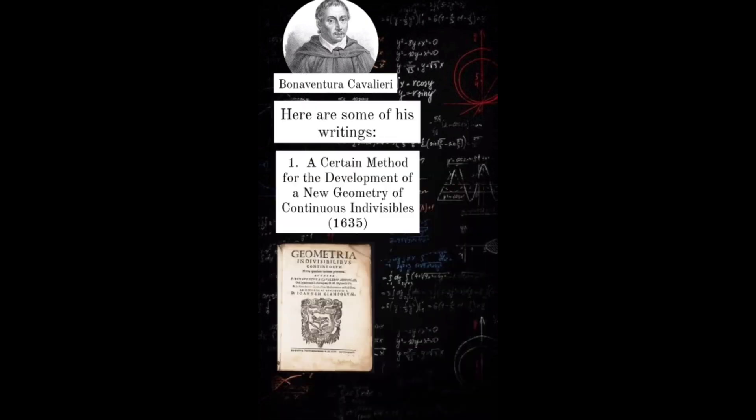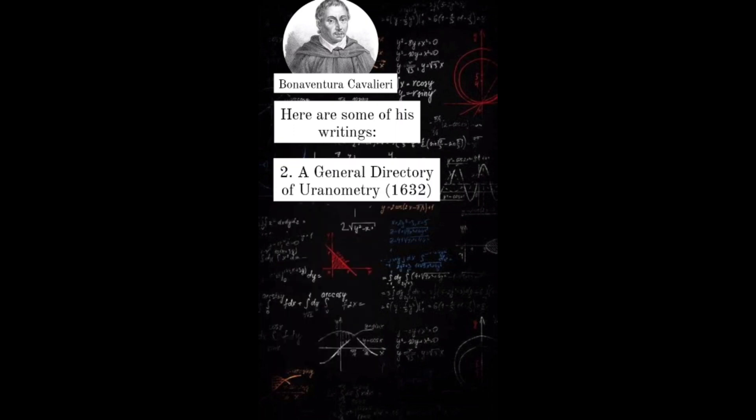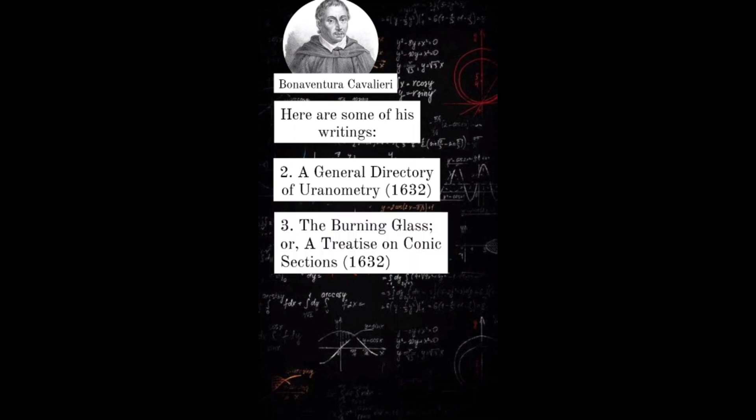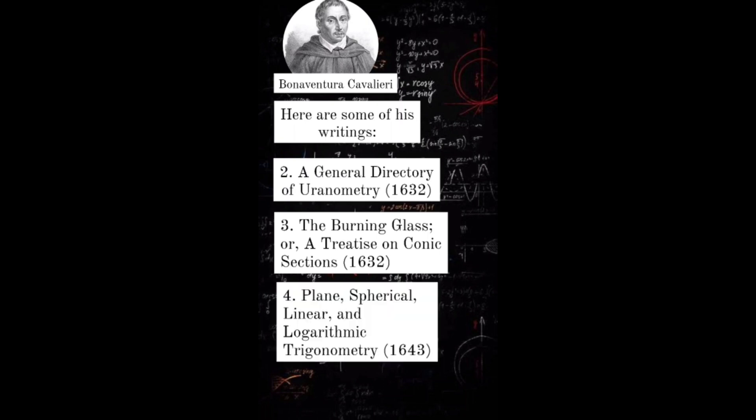Here are some of his writings: 1. A certain method for the development of a new geometry of continuous indivisibles. 2. A general directory of uranometry. 3. The burning glass, or, a treatise on conic sections. 4. Plane, spherical, linear, and logarithmic trigonometry.